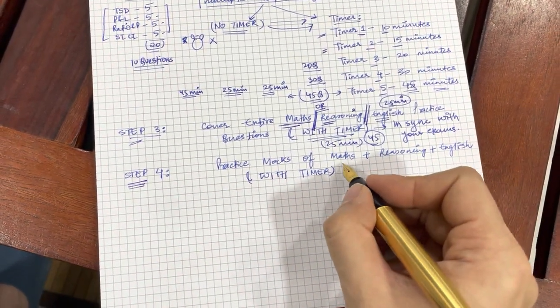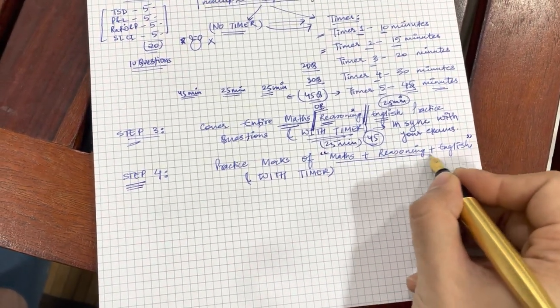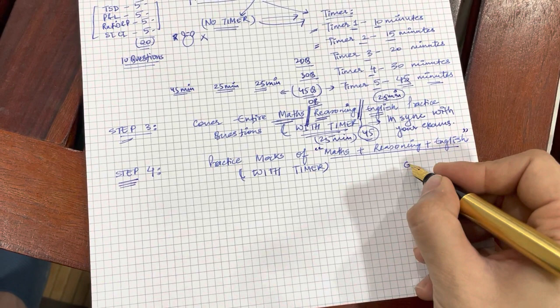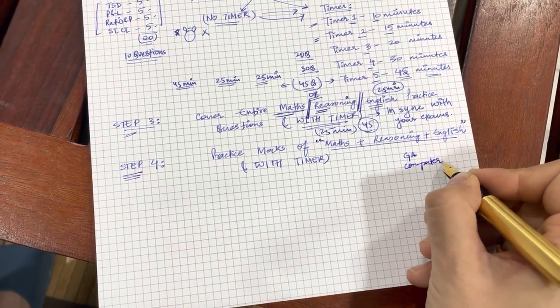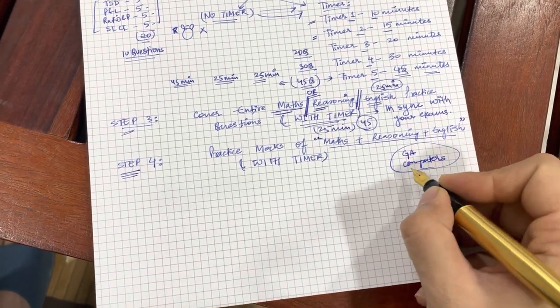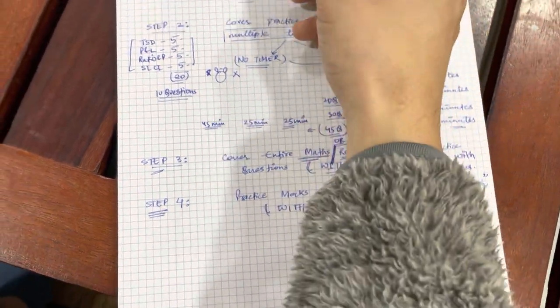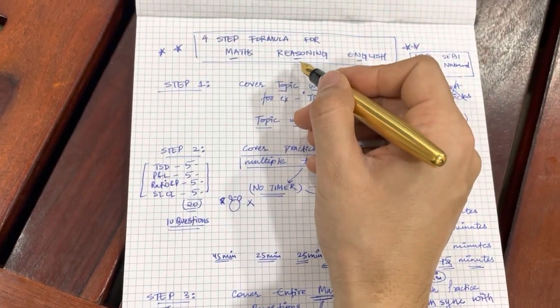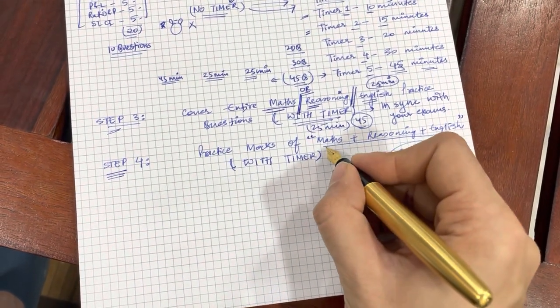In this step, you are going to take a comprehensive mock of all the three. Remember, I am not including GA computers here. Those can be added later. That will be another step if you want to add those, but at this step because we are dealing with only quant, reasoning, maths, English and reasoning. Therefore, I would want to focus on this only.